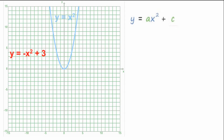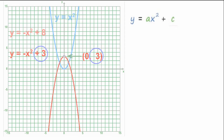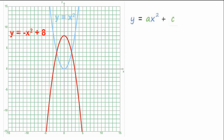If we had Y equals negative X squared plus 3, downward facing parabola, vertex at (0, 3). And the relationship holds. If we had negative X squared plus 8, still a downward facing parabola, vertex at (0, 8).